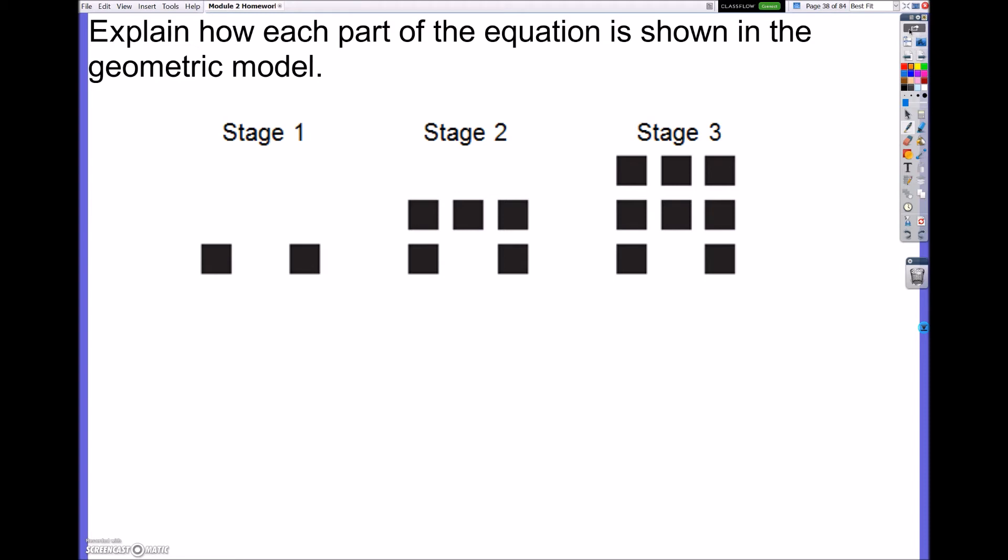So explain how each part of the equation is represented here. The equation was the total amount of blocks is equal to 3S minus 1. What this is saying is, we'll start with this. For each stage, we are increasing by 3 blocks.